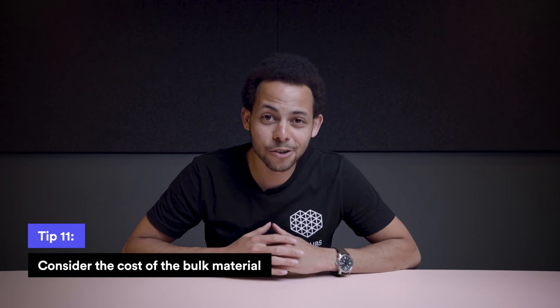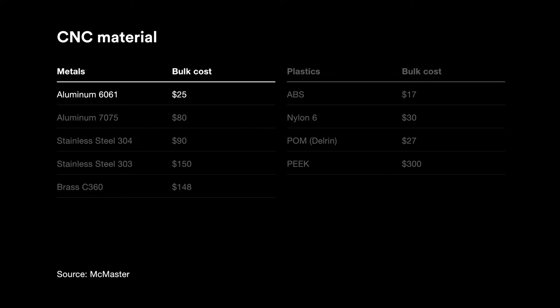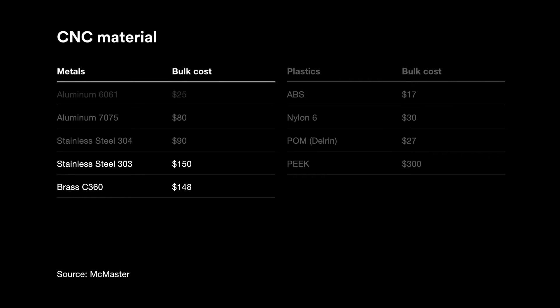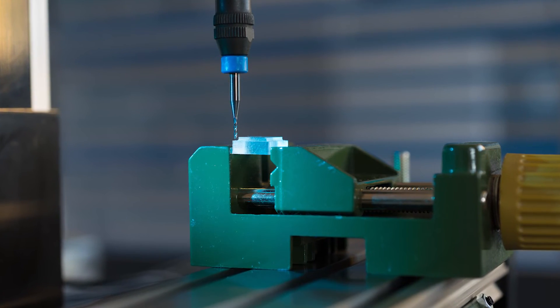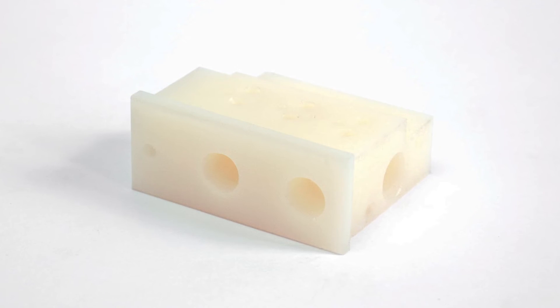Tip number 11: consider the cost of bulk material. To minimize cost, choose a material with low bulk costs, especially for lower volumes. A comparison table shows prices for common metals and plastics in a 6×6×1 inch sheet. Aluminium 6061 is the most cost-effective for metal prototypes, combining low cost and very good machinability. Metals with greater machinability, like stainless steel 303 and brass C360, have higher costs and are better suited for large volume production. For plastics, ABS, Nylon, and POM are priced similarly to Aluminium 6061, though they are more difficult to machine. PEEK is very expensive and should be used only when necessary.